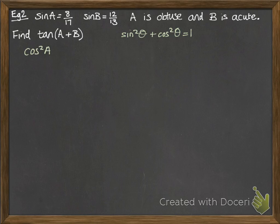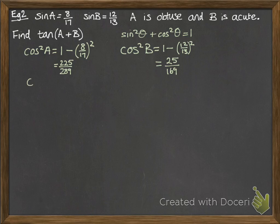You know sine squared plus cos squared equals 1. So cos squared A will be 1 minus sine squared A, and cos squared B would be 1 minus sine squared B. So we just square those values that we were given in the question and work that through. And then cos A will be plus or minus the square root of 225 over 289, and cos B will be the square root of 25 over 169, plus or minus.